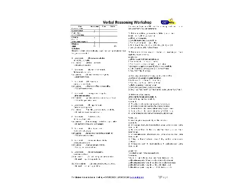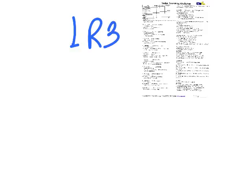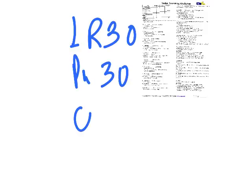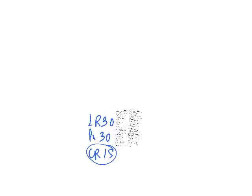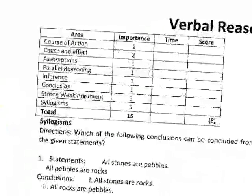Hi guys, in this topic we will talk about verbal reasoning, which is the critical reasoning part of the CET exam. The verbal logic section is 75 marks total, so let's talk about this section together.